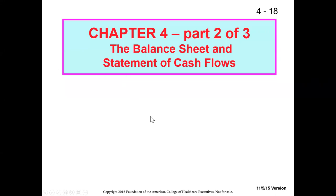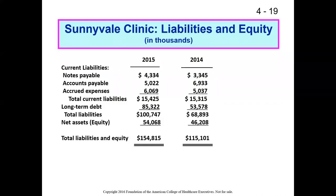Welcome back to part two of the chapter four lecture based on Kapinski's Healthcare Finance, sixth edition, though this should apply to most recent editions. We've been talking about the balance sheet's asset side. Now we're moving into discussing the right side of the balance sheet — the liabilities and owner's equity portion. Total liabilities and equity adds up to $154 million, the same as the asset side. This portion represents the financial obligations and ownership of the organization — its capital structure, how it is financed.